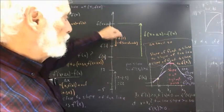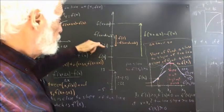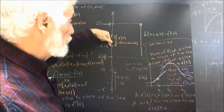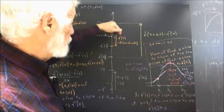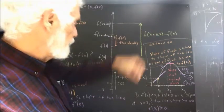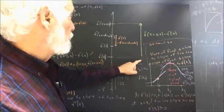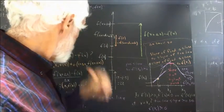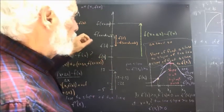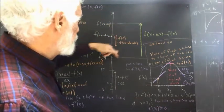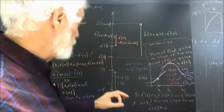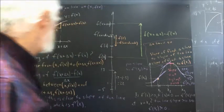If we wanted to do f of 2 minus f of R, that would give us the displacement from f of R to f of 2. This displacement would be represented by f of 2 minus f of R. F of x plus delta x minus f of x would be represented by an arrow from f of x to f of x plus delta x. So: 17 minus negative 5 is represented by the arrow from negative 5 to 17; f of 2 minus f of R by the arrow from f of R to f of 2; and f of x plus delta x minus f of x by the arrow from f of x to f of x plus delta x.